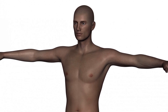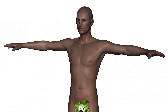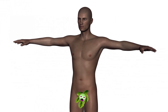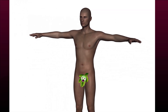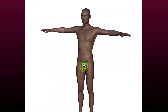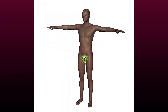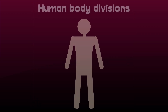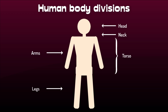Let's pretend that this is the first time we ever saw a human being and tried to make heads or tails of their body. The first thing that becomes obvious is that it can be divided into several main parts. There is a distinct head, connected to a torso through a neck, and two pairs of limbs — the arms and legs.